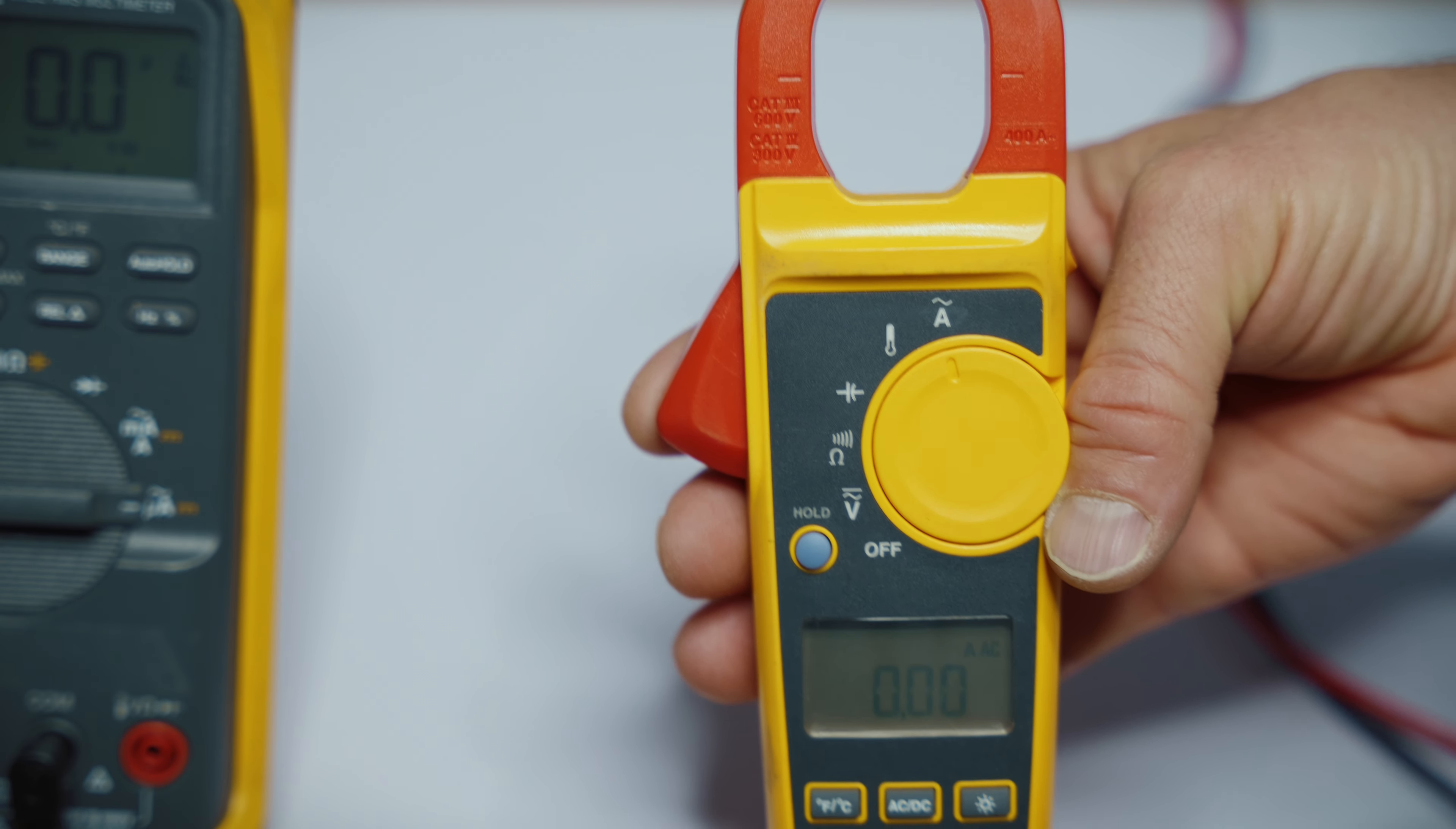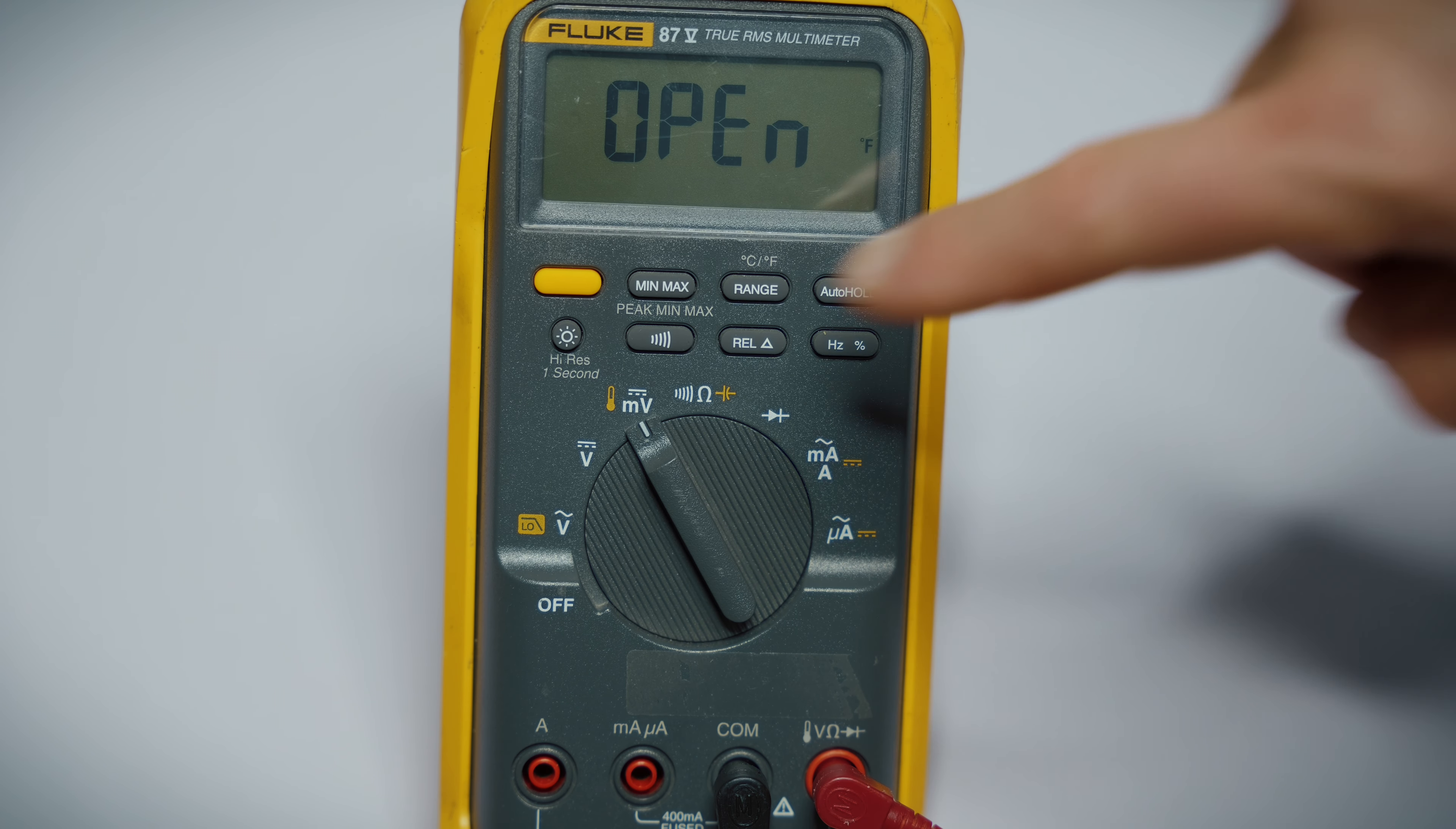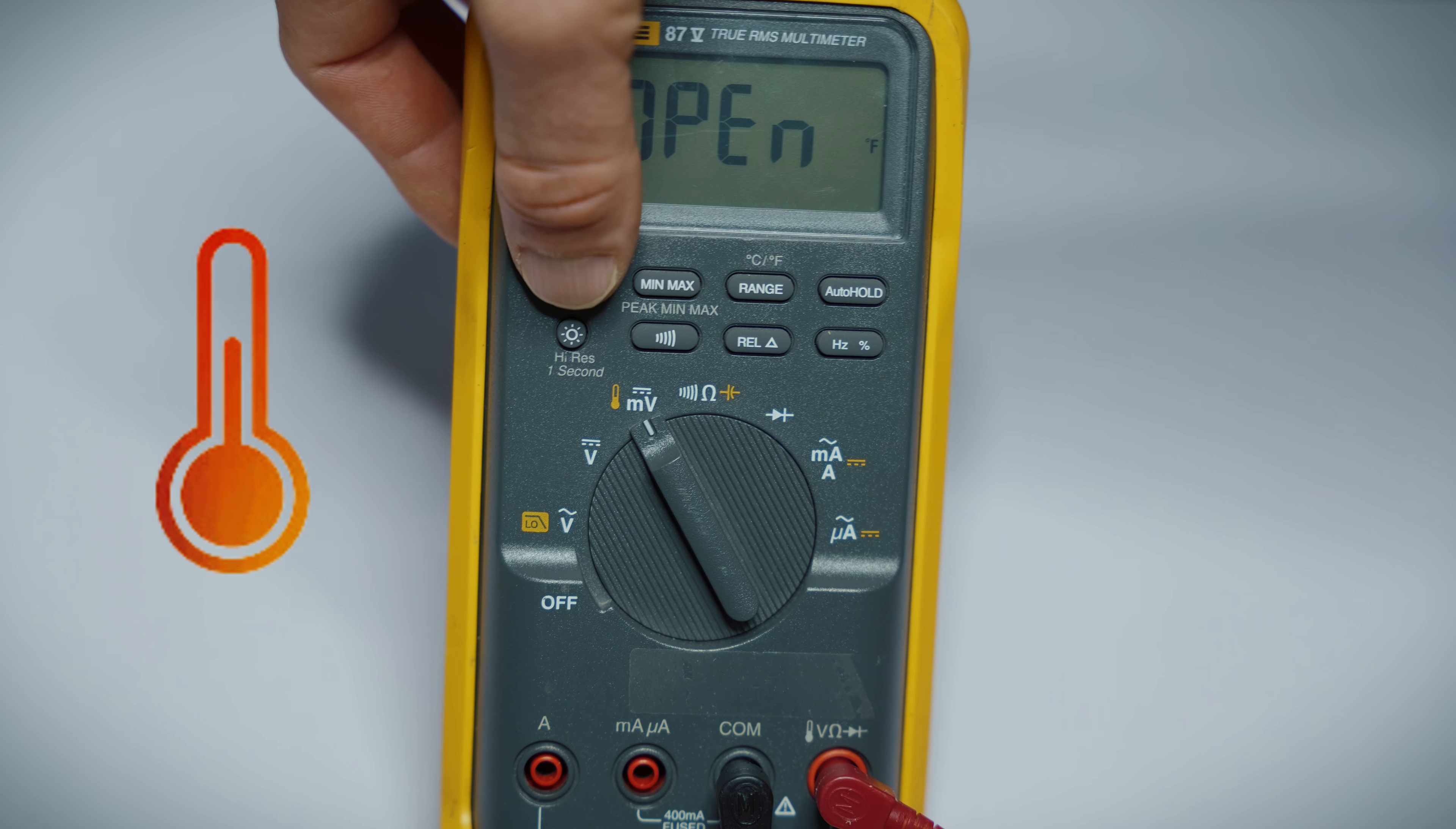So this, the Fluke 324, which is primarily a clamp on ammeter, is another option. You just insert your red and black leads to the bottom, and you can use this in itself as a multimeter. And then you have the much safer amperage check with the clamp.